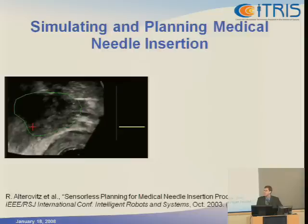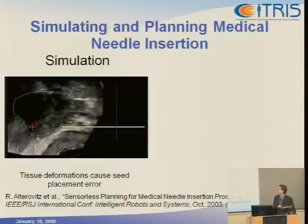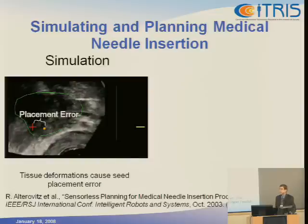One of the initial challenges that physicians often encounter is that of tissue deformations. When they insert the needle, which is shown here in yellow, into the prostate, which is shown in this ultrasound image outlined in green, to a target shown by the red cross, tissue deformations often occur, which you can see here in this simulation. So even though the needle can be inserted to the target, there's a large placement error that often develops.